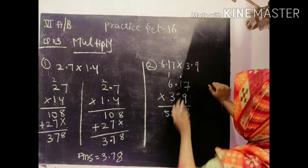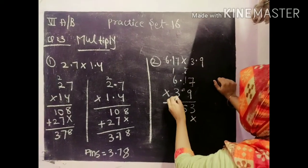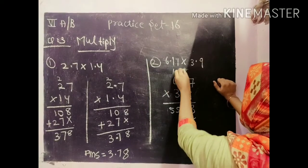3, 7's are 21. Here 1 will come. Again which number will come? 2. 3, 1's are 3. 3, 1's are 3 and 2, 5.